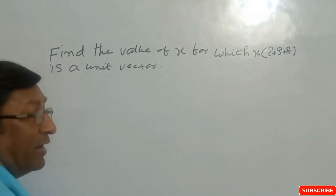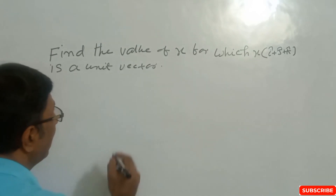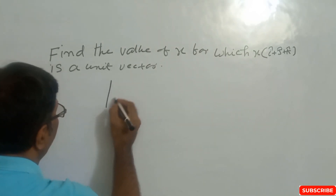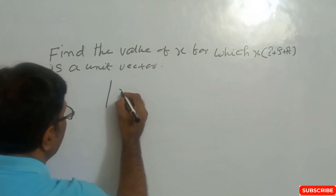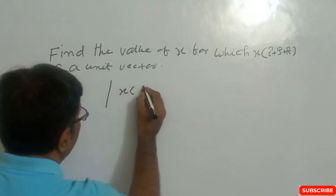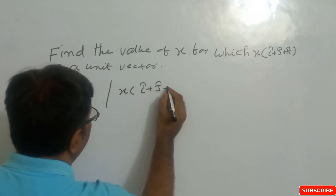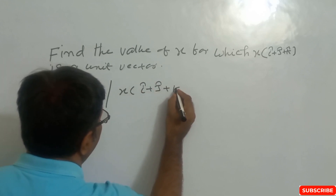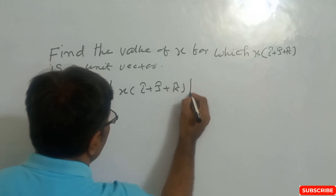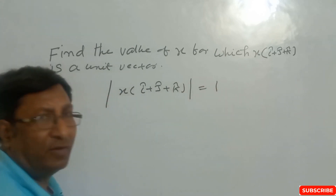So we have to find the value of x for which this is a unit vector. You know the magnitude of a unit vector is 1. So the magnitude of x times (î + ĵ + k̂) equals 1.